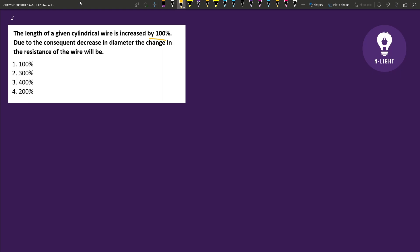Today I have a question: The length of a given cylindrical wire is increased by 100%. Due to the consequent decrease in diameter, the change in the resistance of the wire will be?